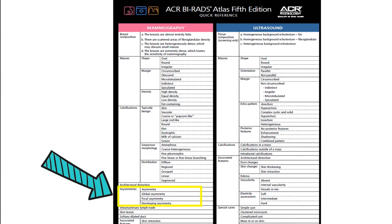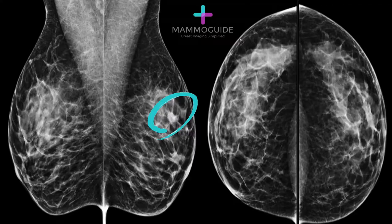Today we'll talk about the four types of asymmetries: asymmetry, global asymmetry, focal asymmetry, and a developing asymmetry.